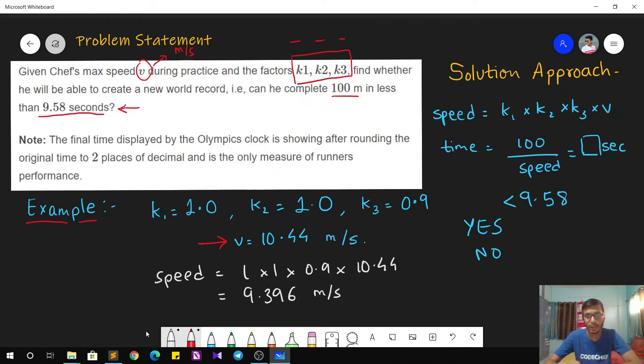We have to actually find the time for world record. So the time can now be found by dividing 100 divided by 9.396. And this quantity, if you calculate, it comes out to be 10.643 seconds. So this is the final time that Chef is going to take to complete 100 meters in the race. But wait, it is told in the question that we have to round off up to two decimal places. So if we round it off, it will be nothing but 10.64.